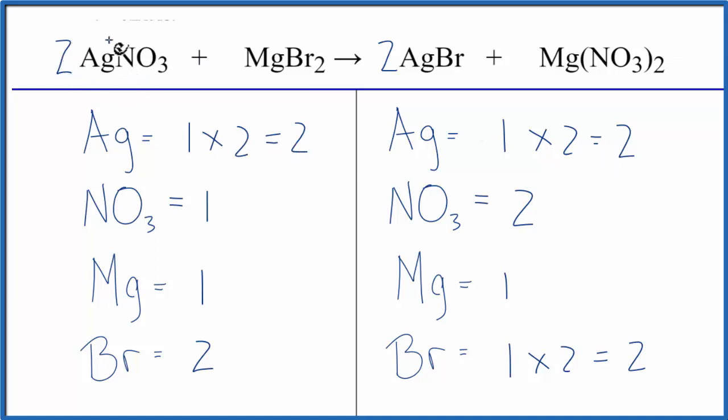The 2 applies again to everything. We have one of these NO3s, these nitrates. So this 1 times the 2, that'll give us two nitrates, and we're done.